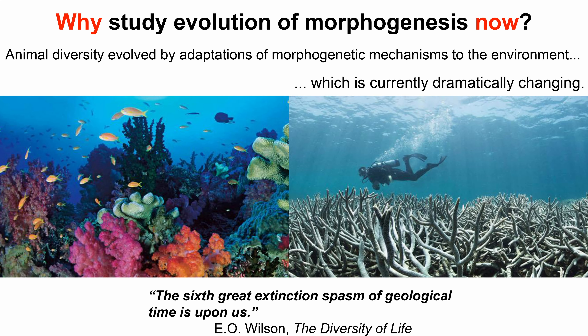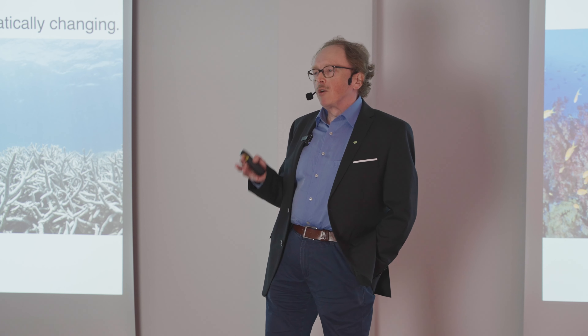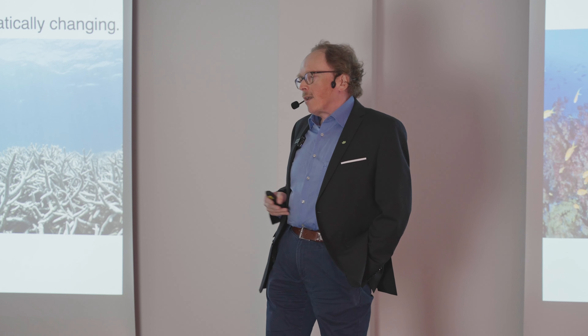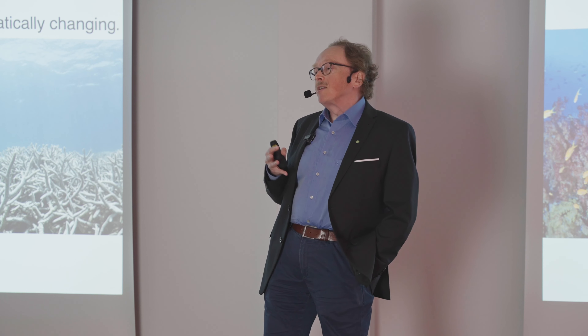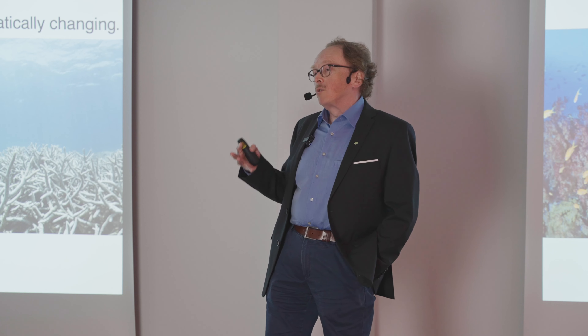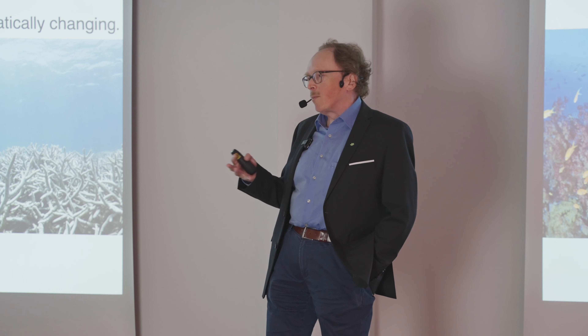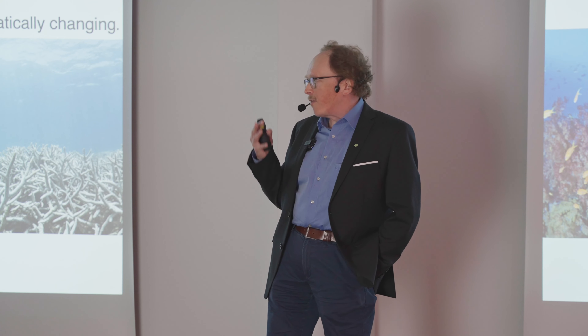Why is now a good time to study such an abstract process as morphogenesis? This diversity of animal form has evolved by optimizing through evolution to a certain environment, and this environment is now dramatically changing. It has been argued that we are living in the sixth extinction of geological time — the last one happened when dinosaurs were ruling the earth. What one forgets is that extinction doesn't only mean that the adult form of the animal disappears; it also means that sometimes the reason why animals go extinct is because their embryos cannot develop. Therefore it is very important to study how embryonic processes interact with the changing environment to counteract this catastrophe befalling our planet.